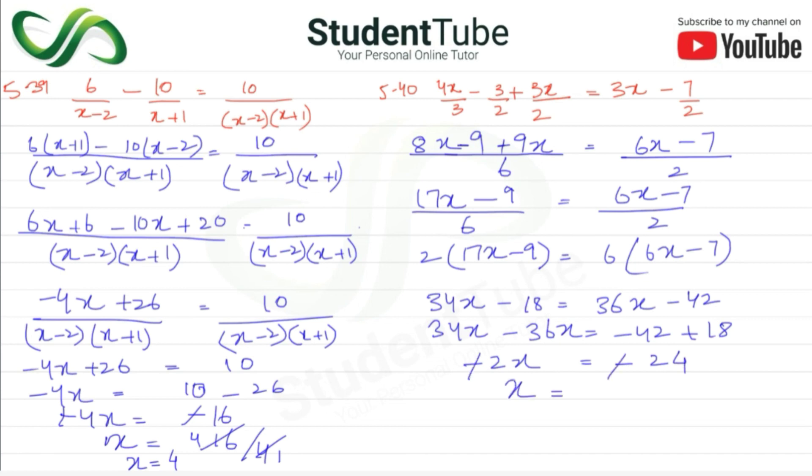So minus minus cancel. x is equal to 24 upon 2. So 2, 1s are 2, 2, 1s are 2, 2, 2s are 4. x is equal to 12, answer.